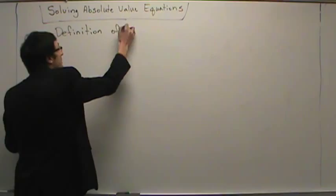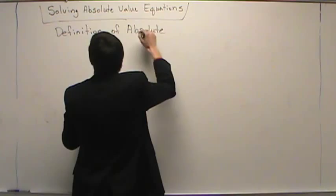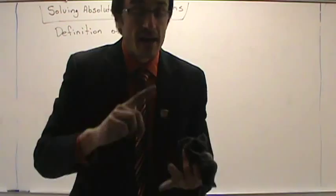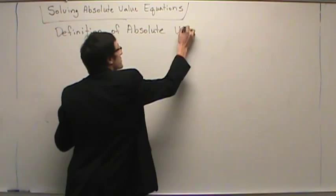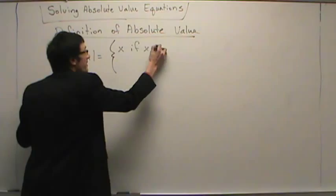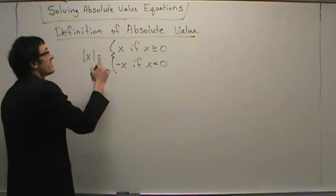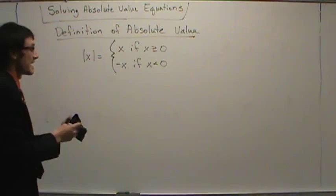First definition is the Definition of Absolute Value. Some students take their definition sheet and put it on the front of their binder, so that every day they open their binder it's the first thing they see. They learn that the two most important things for being successful in this class are homework and knowing your definitions, because definitions are free points if you know them. When you write this definition down, do not change anything — it has to be written exactly as you see it. To change something is wrong.